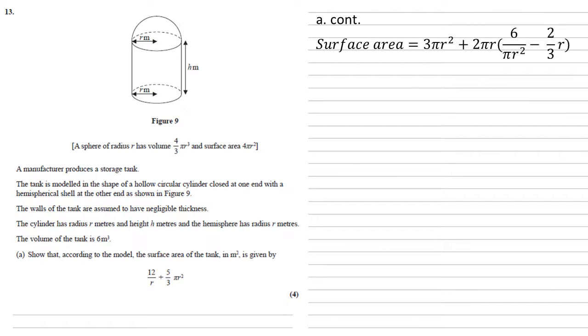All we need to do now is simplify our formula, so we've got 2πr times a bracket, let's expand that. So, 2πr times by 6 over πr², we've got 2 times 6 for the 12, the π's cancel out, and the r will cancel out one of the two r's on the bottom, so that's 12 over r.